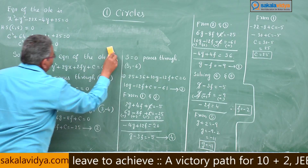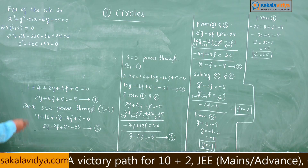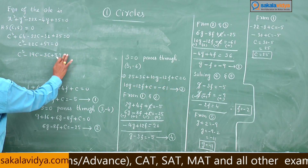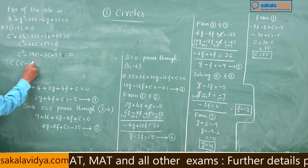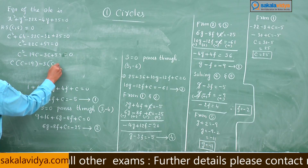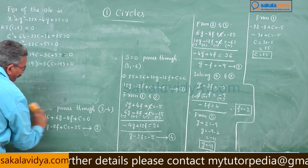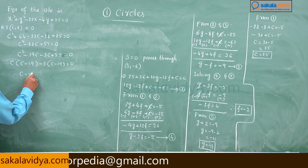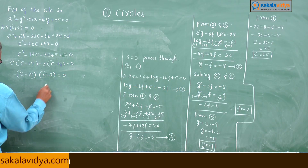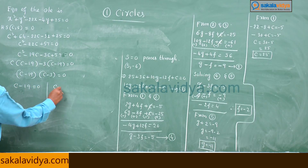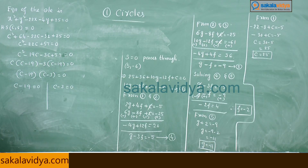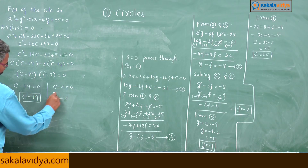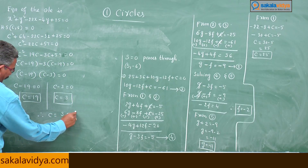Solving the quadratic C² − 22C + 57 = 0: factoring gives C² − 19C − 3C + 57 = 0, so C(C − 19) − 3(C − 19) = 0, giving (C − 19)(C − 3) = 0. Therefore C = 19 or C = 3.